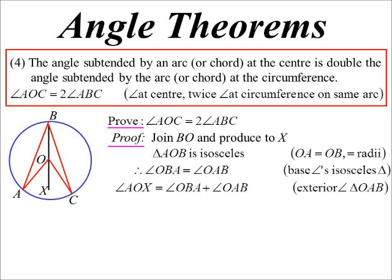And AOX will be, well, it's the exterior angle of the triangle. So it'll be those two added up, OBA and OAB, but we just said they were the same so I could say that's twice OBA.